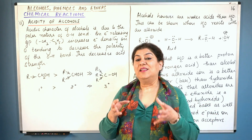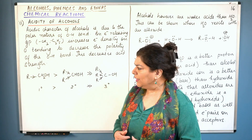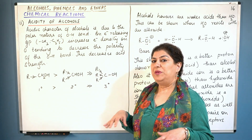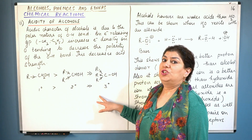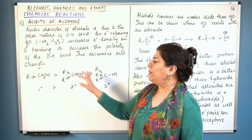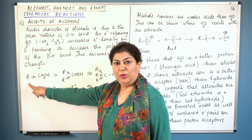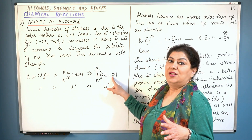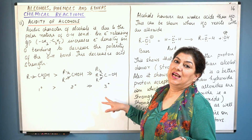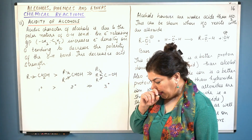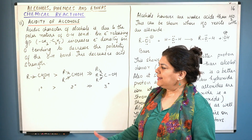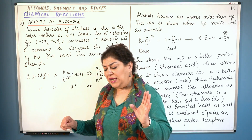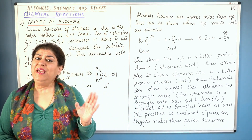An electron-releasing group like methyl or ethyl increases the electron density of oxygen, tending to decrease the polarity of the OH bond. If polarity decreases, acidity decreases, because the chances of hydrogen leaving as H⁺ decrease. So which is the strongest acid among primary, secondary, and tertiary alcohols — assuming all alkyl groups are methyl? Primary has one methyl, secondary has two, tertiary has three. The electron-releasing power is greatest in tertiary, so polarity is least there; tertiary is the least acidic and primary is the most acidic. But even with one alkyl group, the alcohol is already a weak acid — so alcohols are actually very weak acids.